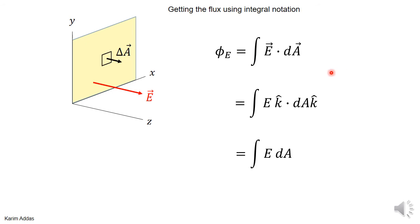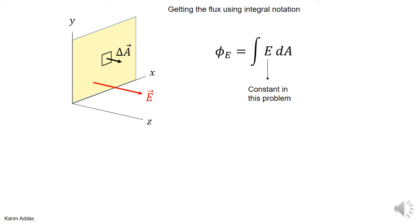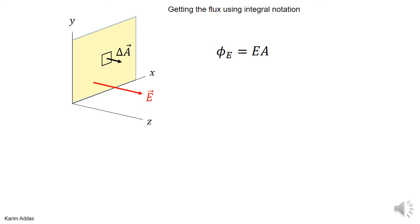If you want to use the integral approach directly, you write the integral of E · dA, put E as E k-hat and dA as dA k-hat, and since k-hat · k-hat equals one, you get the integral of E dA. Since E is a constant, it comes out of the integral, leaving the integral of dA, which is just the total area — the same result as before. I used the limit-of-sums approach first because it gives intuitive understanding of what the integration is doing; in the first few problems I'll use both approaches together.